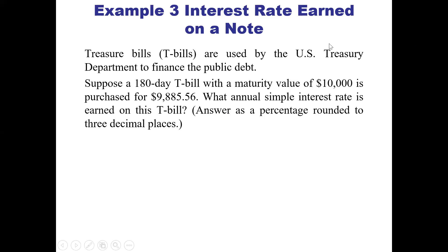Suppose we have a 180-day T-bill with a maturity value of $10,000, and it's purchased for $9,885.56. What is the annual simple interest rate earned on this T-bill? The answer is the percentage rounded to three decimal places.